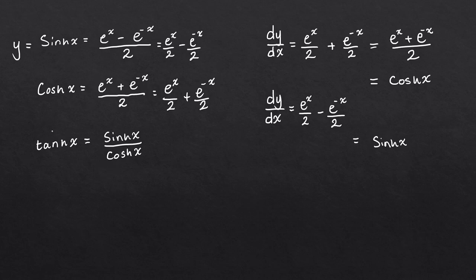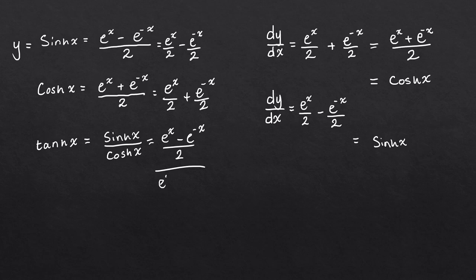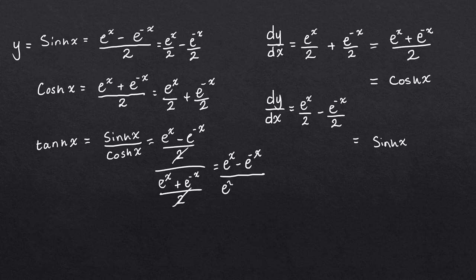Finally, let's look at hyperbolic tan. There are two ways to do this. You can write the exponential definition: sinh x over cosh x simplifies to e to the x minus e to the minus x over e to the x plus e to the minus x, and differentiate using the quotient rule. Or we can differentiate sinh x over cosh x directly using the quotient rule — let's do it that way.